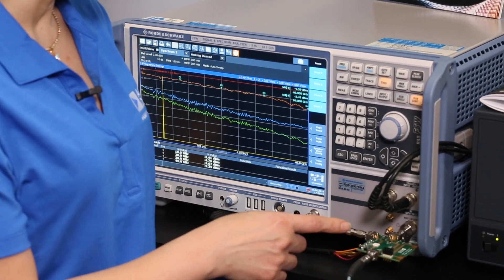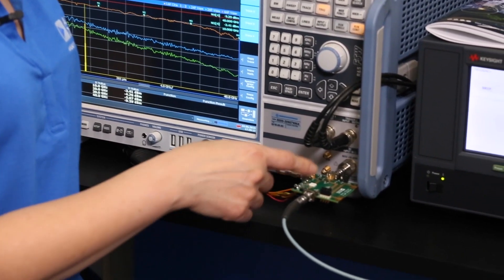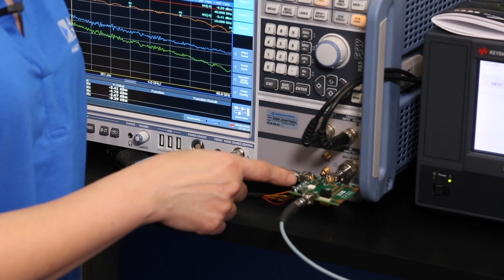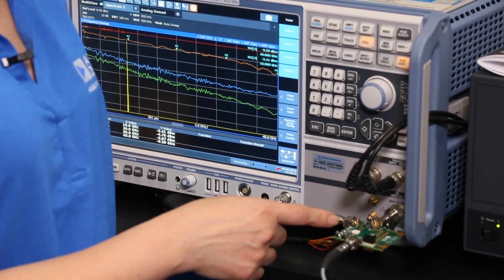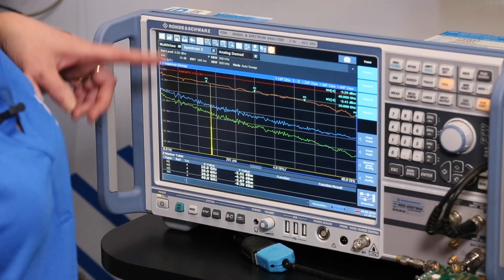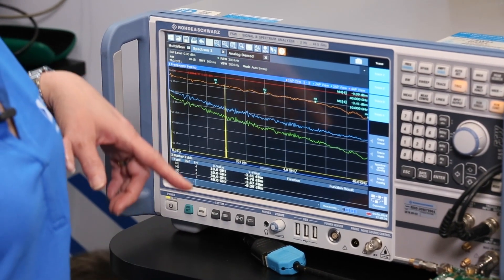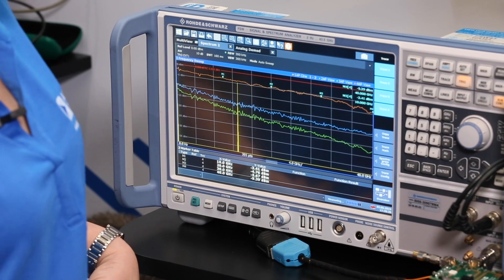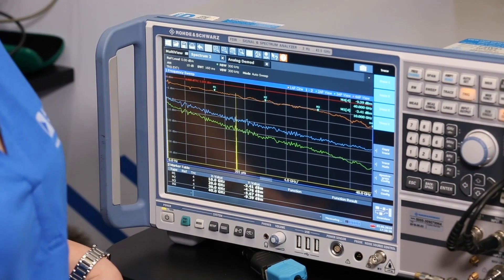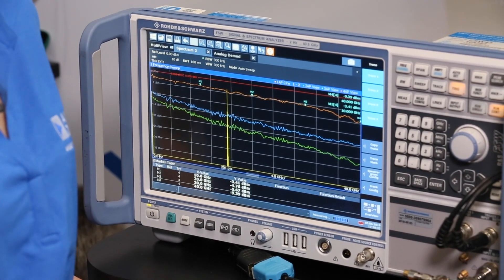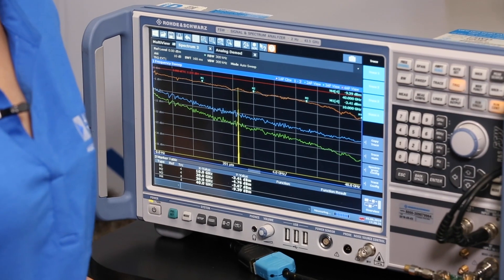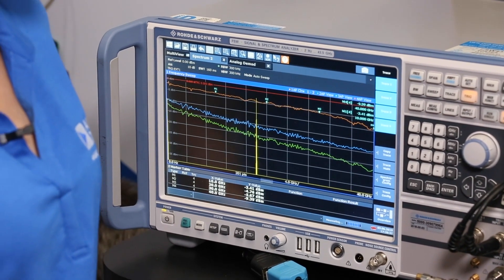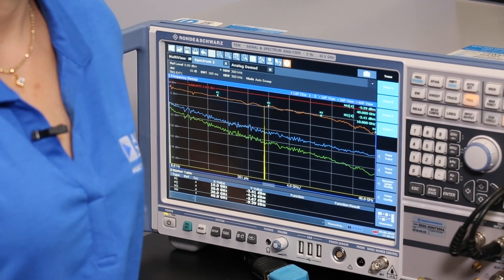On the second path, we have the signal applied into the ADRF 5740, the digital attenuator, and we are showing the ultra low insertion loss. At 40 gigahertz, the device has 2.5 dB of insertion loss, and at 60 gigahertz, the device is about 4 dB of insertion loss.